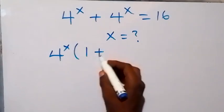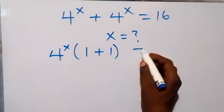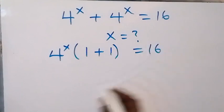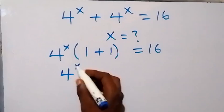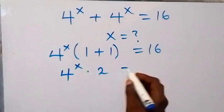This will mean 1 plus 1, which equals 16. And this 1 plus 1 is 2, so we have 4 raised to x times 2 equals 16.